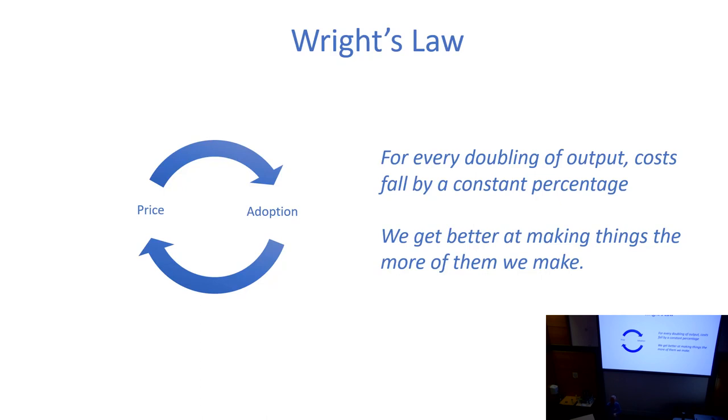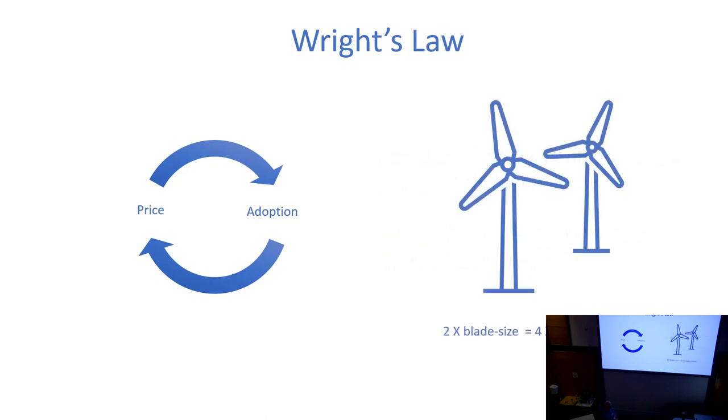When you start combining exponential technologies, you accelerate that exponential even more. We do have the non-linear tools to potentially, with a greater awakening of the crisis we're in, battle that crisis. An example of Wright's Law in action: if you take a windmill and double its blade size, because of pi r squared you essentially quadruple its power output. It's an example of how getting better at manufacturing something makes it significantly geometrically more powerful.